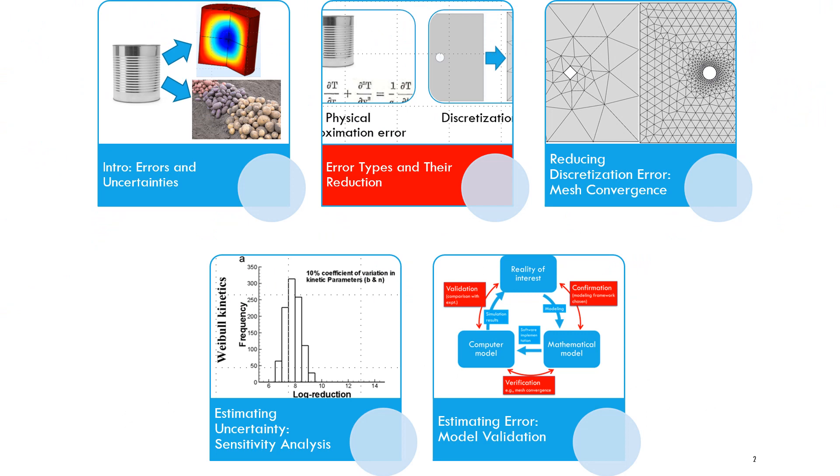This video is part of a course on food physics, in the modeling section. It is the second of a five-part series on error, uncertainty, and validation. Here we give an overview of the different types of errors.